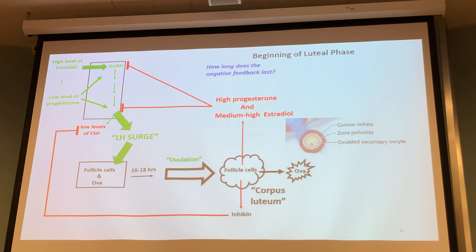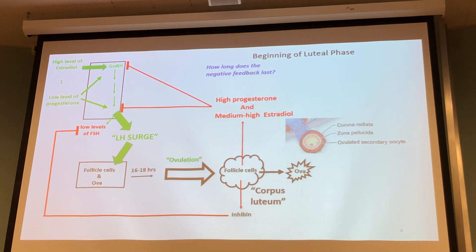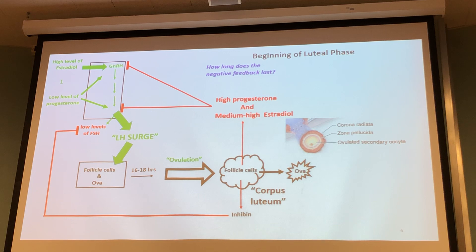What's in birth control pills? Estradiol and progesterone. This negative feedback signal is what birth control pills are mimicking — making the body think it has just ovulated so we don't actually mature follicles to ovulate.